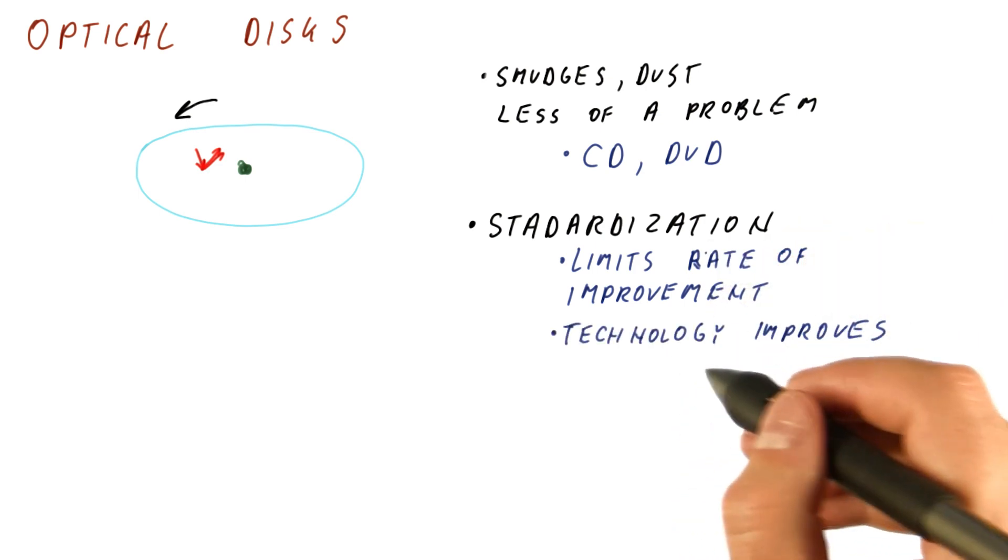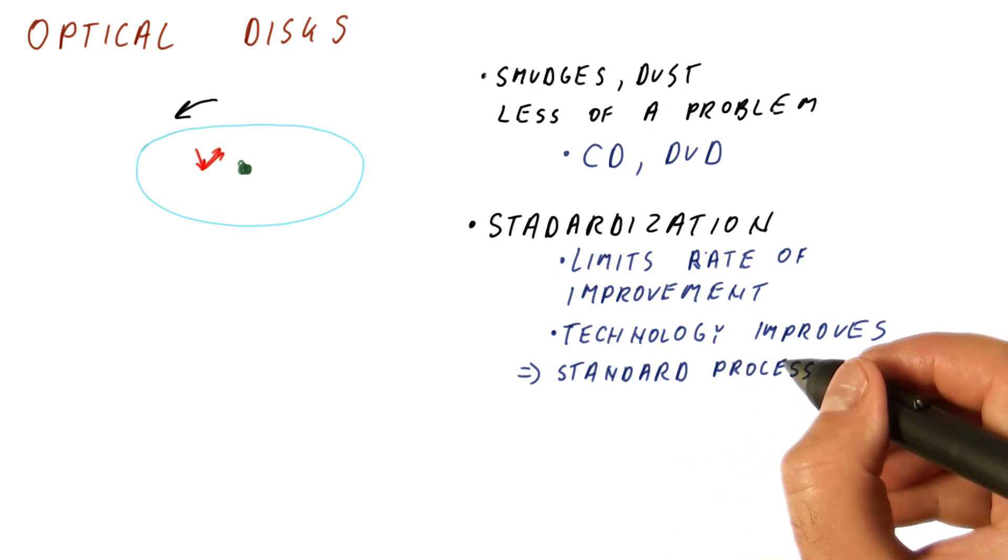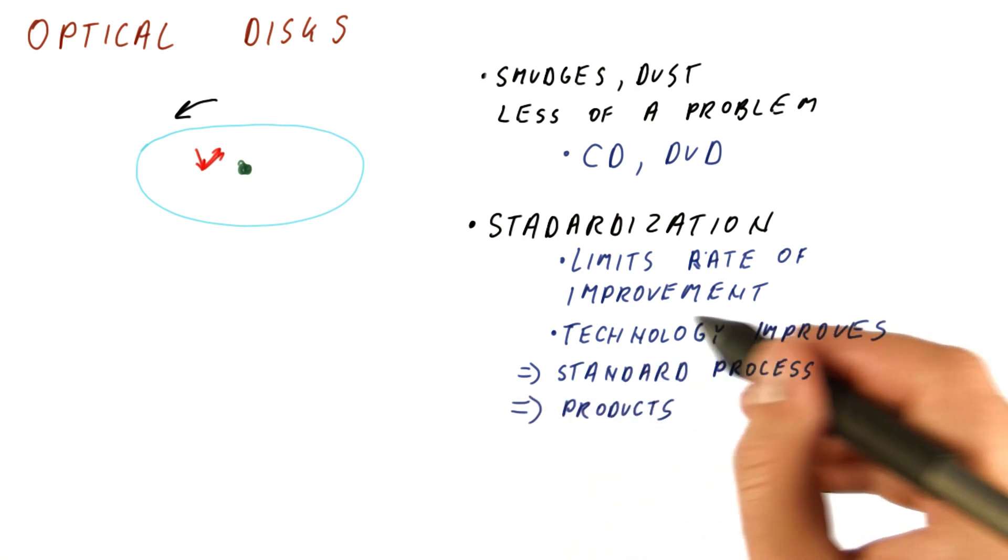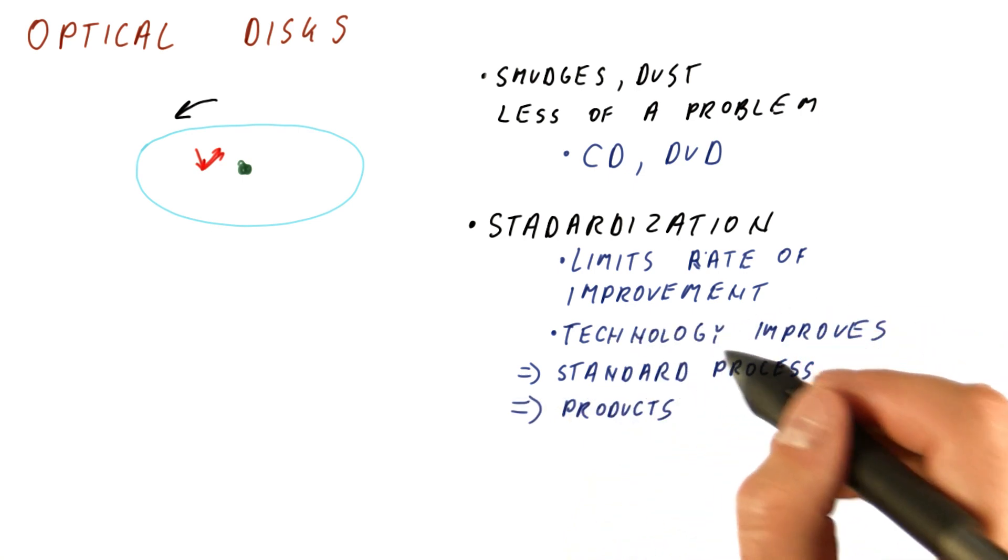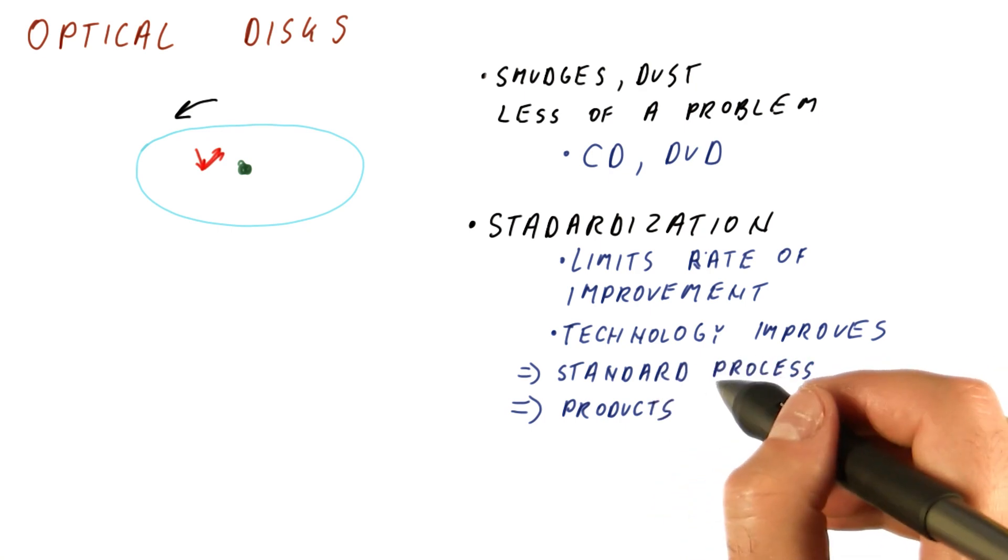Because the technology improves, but then that technology needs to make it through a standards process where companies agree that something will be a standard and only then make it into products. So the technology can improve relatively rapidly, but we don't see any of that progress until a new standard is decided on, at which point products are released.